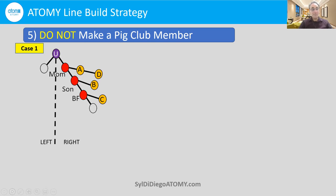First, by putting someone on your mom's right line, it doesn't mean that your mom is going to wake up and want to do the business, even if she loves the products. There's a saying that you can lead a horse to water, but you cannot make them drink. So it's not a good strategy to encourage somebody by building their right line. And of course, it goes against the principle of everybody builds two lines. Your mom has to wake up, make a commitment to put her own people on the right line, which would tend to be her own coworkers, perhaps, or her own college friends.